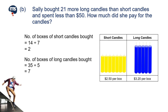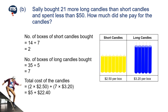Therefore, all in all, the total cost of these candles is the sum of the cost of two boxes of short candles, $5, and the cost of 7 boxes of long candles, $22.40. She paid $27.40 for the candles.